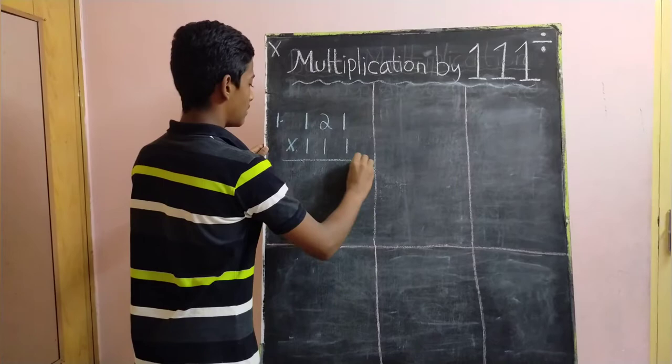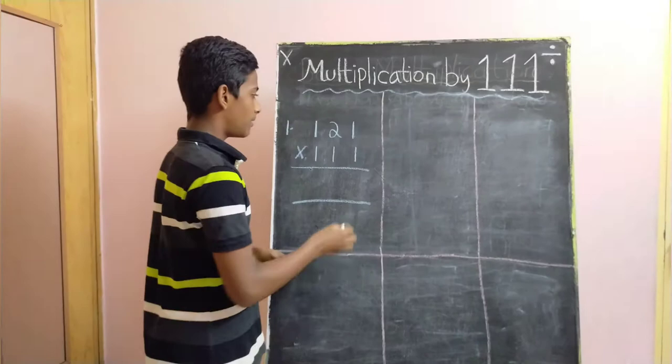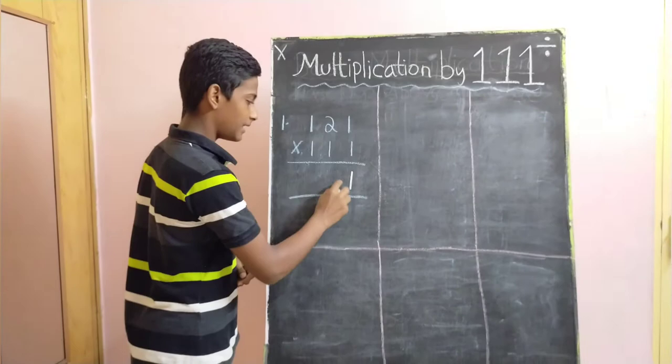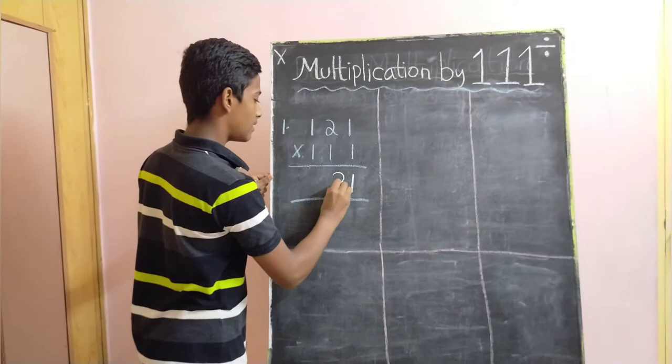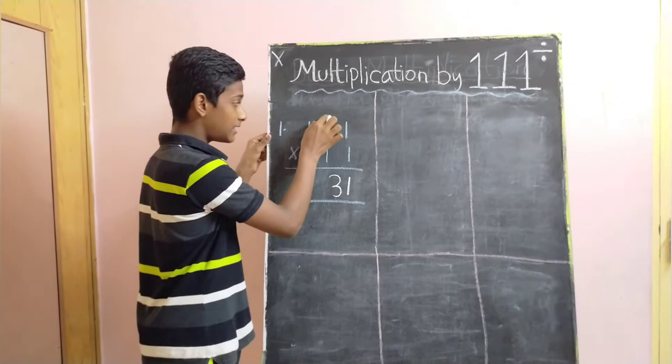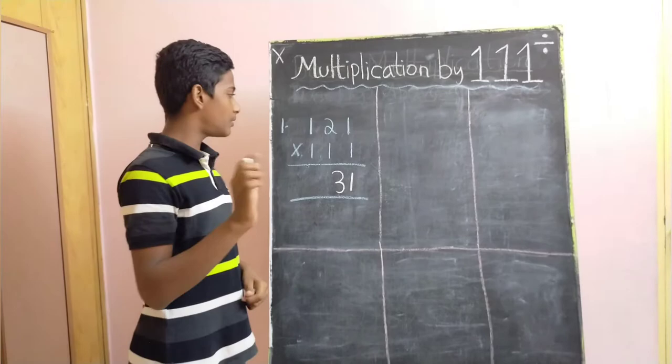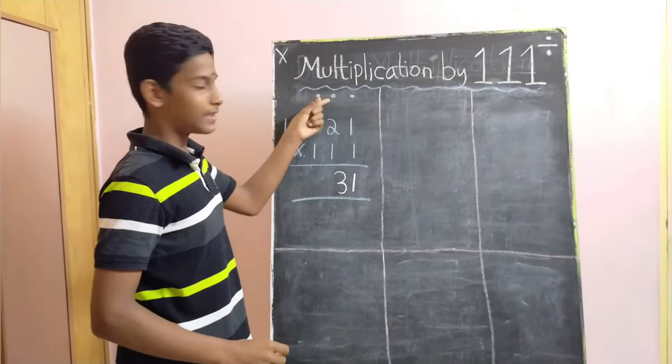First, we have to bring down this 1 and for obtaining the second digit, we have to add 2 and 1 which gives us 3. Then, these 2, then instead of adding these 2 as we do in multiplication by 11, what we are going to do is, if there are 3 numbers, assume these 3 dots are 3 numbers.